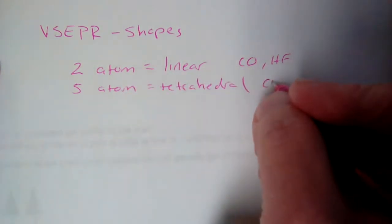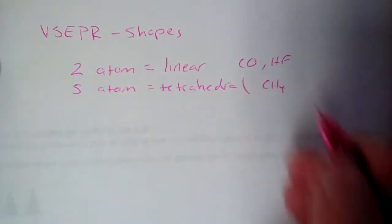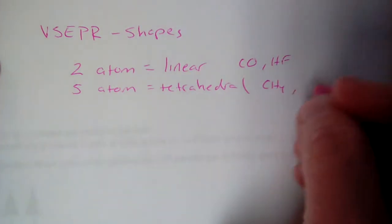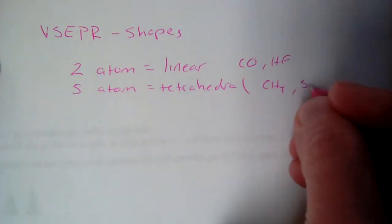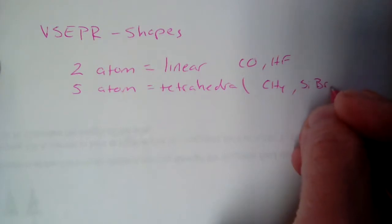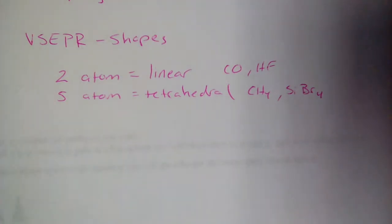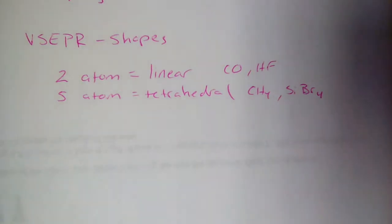The five-atom ones are always tetrahedral — there's no other option. Like methane, one carbon and four hydrogens: I know automatically that's going to be tetrahedral. Or silicon tetrabromide — one silicon, four bromines, five atoms total — it's going to be tetrahedral, and there's nothing more I have to think about it.